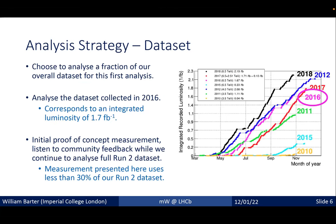We have chosen to analyze a fraction of our overall dataset — just the data collected in 2016. This corresponds to an integrated luminosity of 1.7 inverse femtobarns. The idea is that this is an initial proof-of-concept measurement. We can get community feedback, then continue to analyze our full Run 2 dataset which is more than three times larger, and incorporate that feedback into our legacy Run 2 measurement.